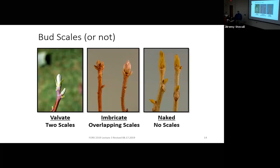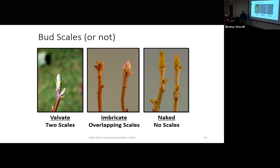We have scales on buds that protect them. If you have just two scales, like on yellow poplar and almost all of our viburnums, it's called valvate — one scale on each side clasped together like your hands. Most of our species have imbricate scales — imbricate means overlapping like shingles on your roof. A few of our species don't have bud scales at all. Bitternut hickory has naked buds where you're actually seeing the leaf primordia themselves. This week we're going to learn poison ivy, which also has naked buds with no scales.